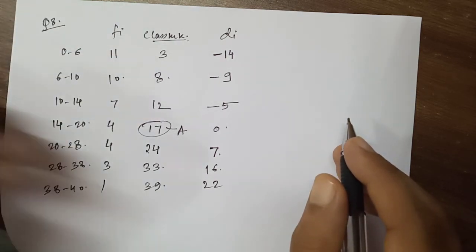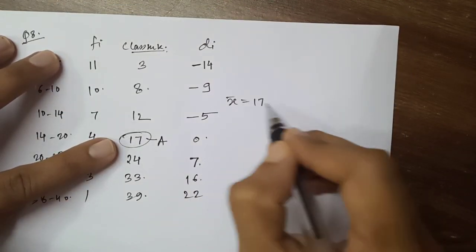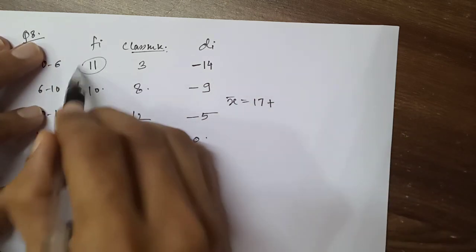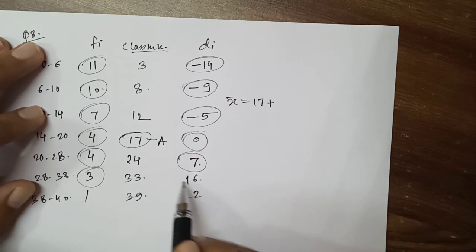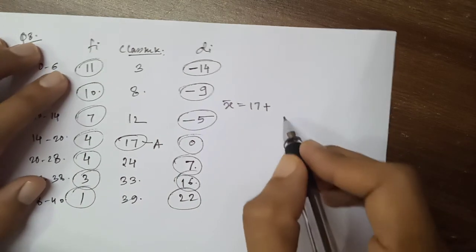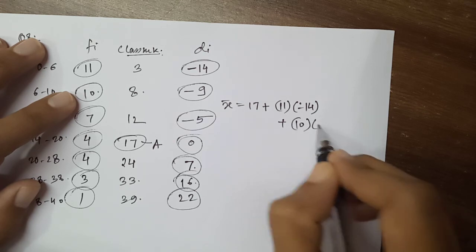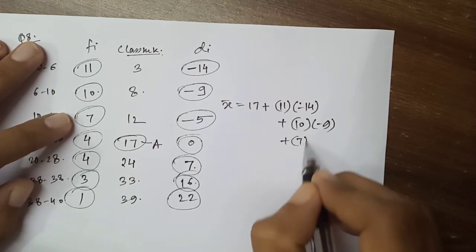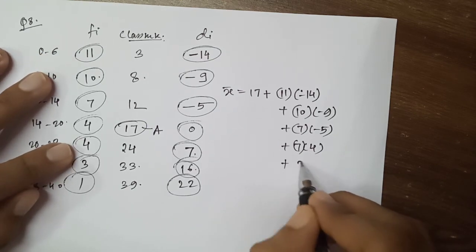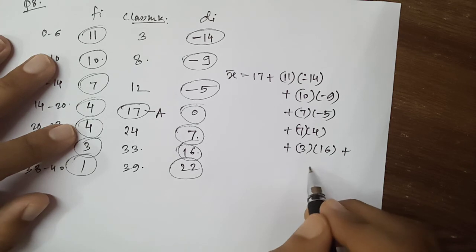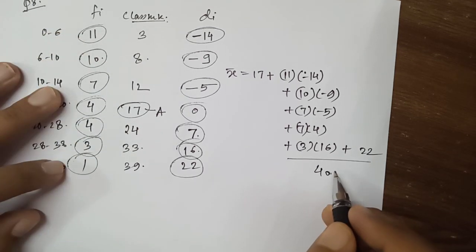The advantage of the assumed mean method is that instead of dealing with large numbers, we work with relatively smaller deviations. Also, one term is always 0. The mean formula gives: 17 + summation(di·fi) / summation(fi). The frequencies are given, and since there are 40 students, the sum of frequencies is 40.